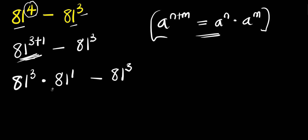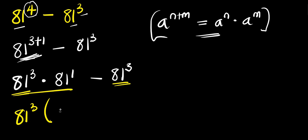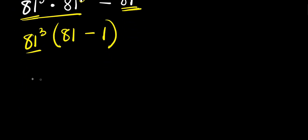From here, we can see 81 to the power 3 appears in both terms, so we factor that out. We have 81 to the power 3 times 81 to the power 1, minus 81 to the power 3 divided by 81 to the power 3. That simplifies to 81 to the power 3 times 81 minus 1, which equals 1.